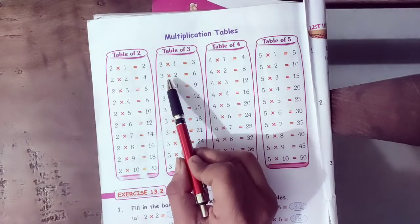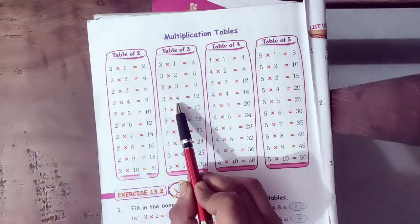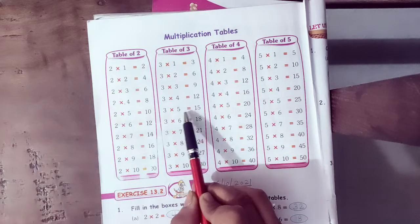3 ones are 3, 3 twos are 6, 3 threes are 9, 3 fours are 12, 3 fives are 15.